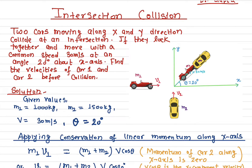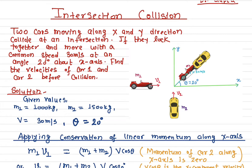In this video I will talk about the intersection collision — the collision of two cars at an intersection. Car one and car two are both moving towards a junction and they collide, after which they move at an angle.